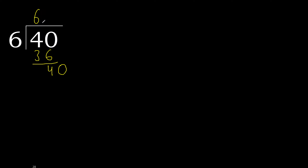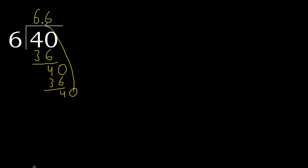Here, with the decimal point — 0 point. 40. 6 multiplied by 6 is 36. Subtract, complete. Always complete with 0. 0 point.